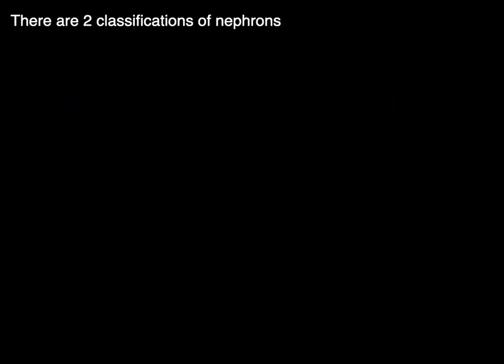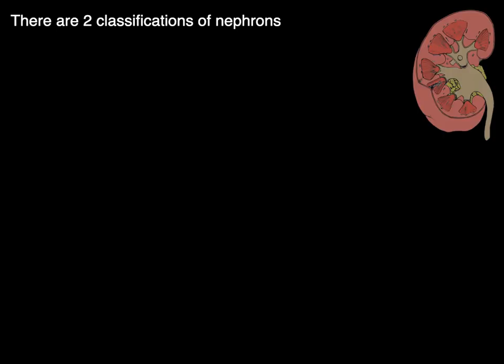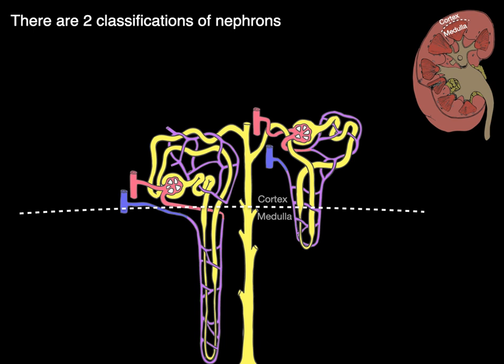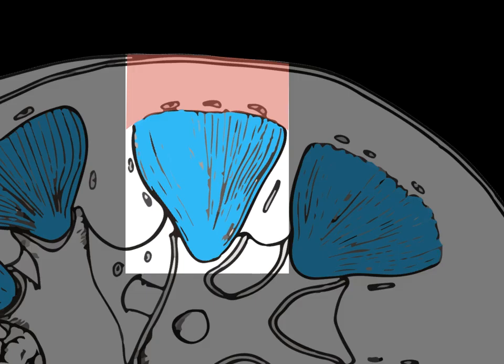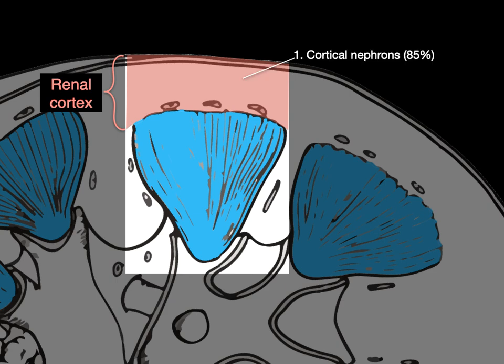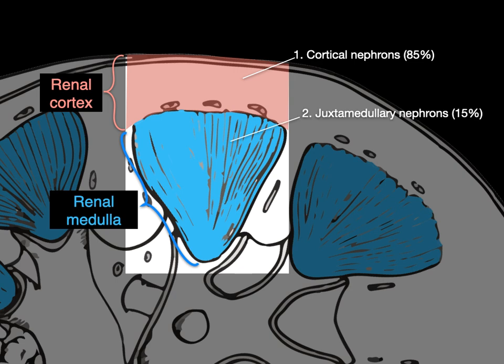There are two classifications of nephrons based on location. Cortical nephrons are found primarily in the renal cortex — about 85% of all nephrons — and their loops of Henle sometimes dip into the medulla. Juxtamedullary nephrons (juxta meaning next to) sit right at the cortex-medulla border and have long loops of Henle that extend deep into the medulla. Only 15% of nephrons are juxtamedullary. The renal cortex contains primarily cortical nephrons, while the medulla houses major elements of the juxtamedullary nephrons.